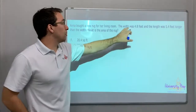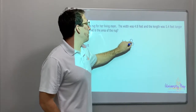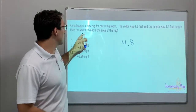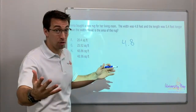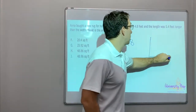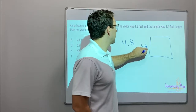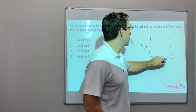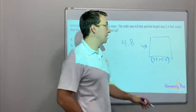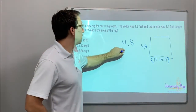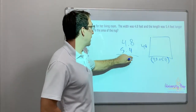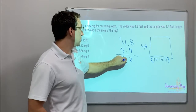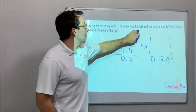Anna bought a new rug for her living room. The width was 4.8 feet and the length was 5.4 feet longer than the width. So we have to do the addition problem before the multiplication problem to find the area. Four point eight plus five point four: 12, carry over, that's 10.2. So the length is 10.2 feet.